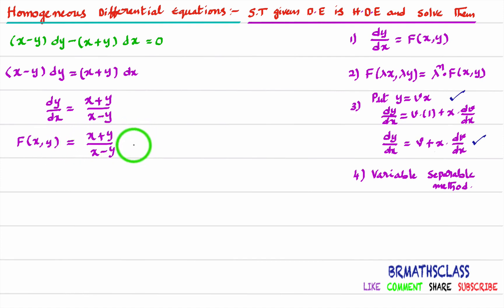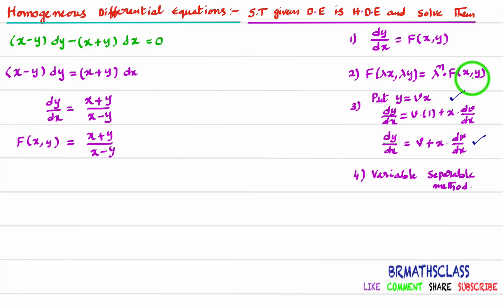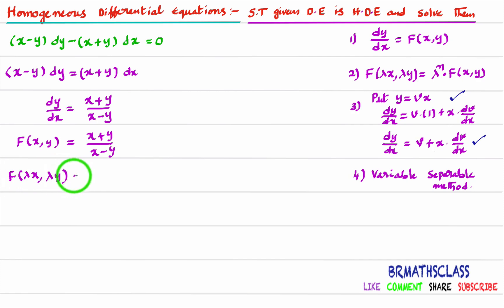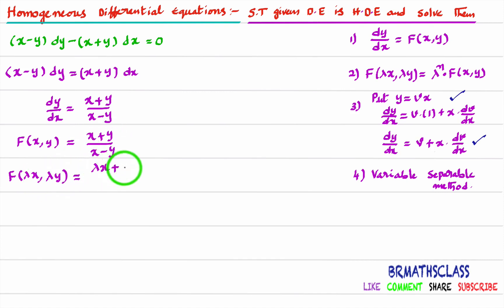Now, to show it is a homogeneous differential equation, I'll calculate f(λx, λy). If we can express it in the form λⁿ · f(x, y), then we say it is a homogeneous differential equation of degree n. In f(λx, λy), in place of x write λx, and in place of y write λy.